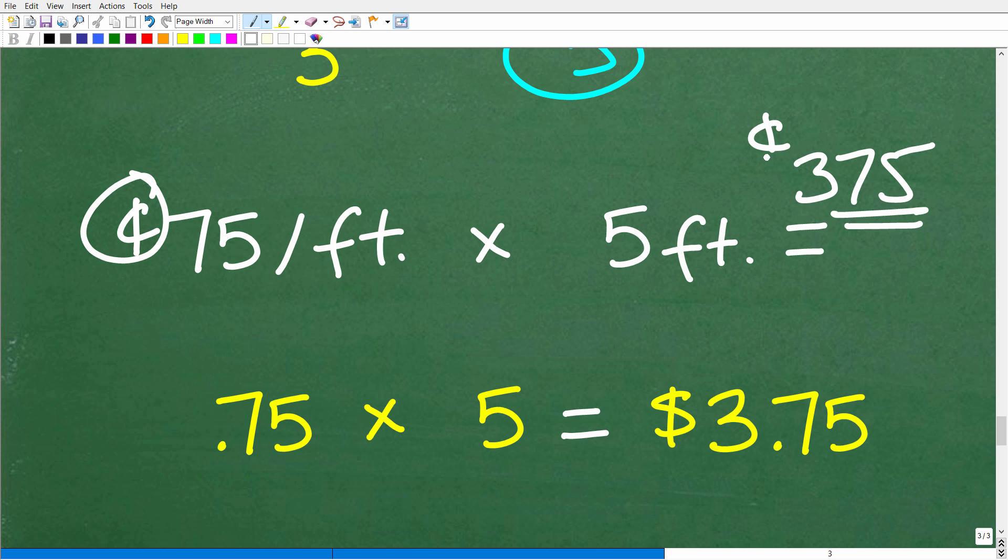Now, a lot of you will be like, well, this is easy, because I know there's 100 cents in $1, so I can convert that to 375 cents or $3.75, or you can take this $0.75 per foot and write that as a fraction. Okay, so 75 cents is equivalent to $0.75 of a dollar because there's 100 cents in a dollar. So 75 over 100 is equal to $0.75 of a dollar.